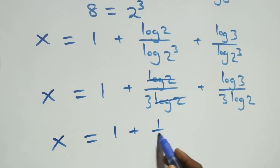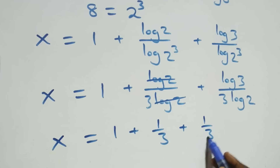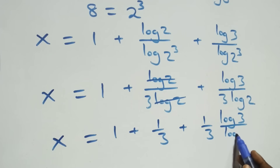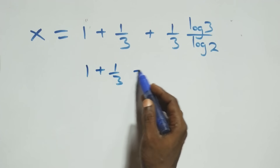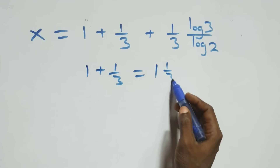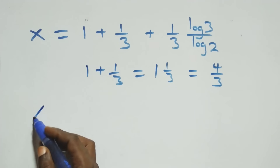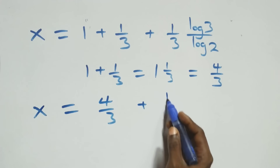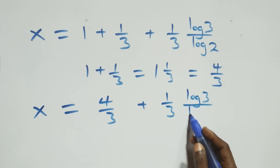We have x equals to 1 plus 1 over 3, then plus 1 over 3 multiplied by log 3 over log 2. That is from here, 1 plus 1 over 3 is the same thing as 4 over 3. At this, all we have becomes x equals to 4 over 3 plus 1 over 3 · log 3 over log 2.